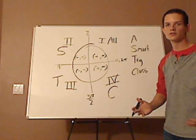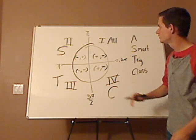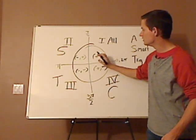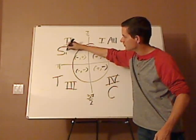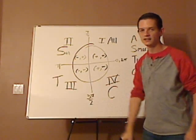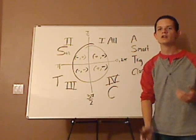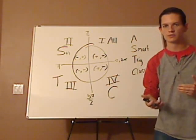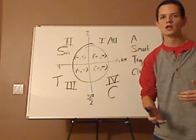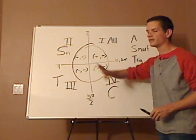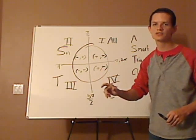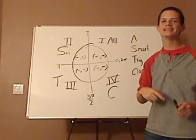So none of the trigonometric functions are negative when the angle is in quadrant 1. In quadrant 2, sine is going to be positive, so that also means its reciprocal function, which is cosecant, will also be positive. And what that also means is that cosine and tangent would be negative.